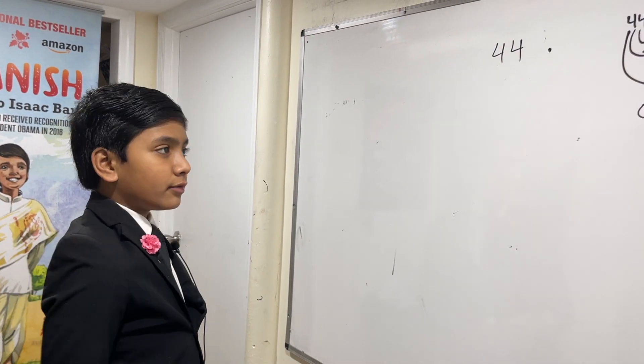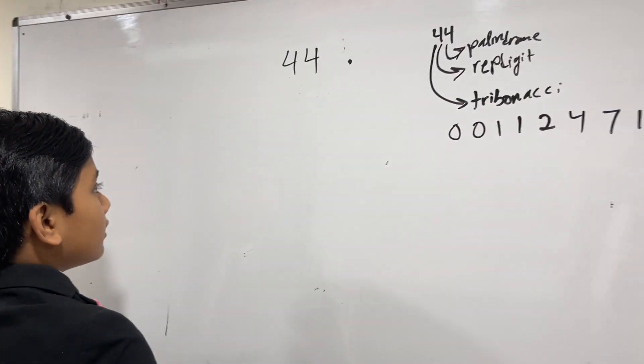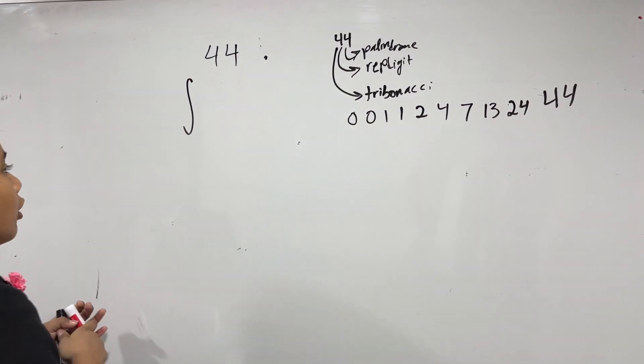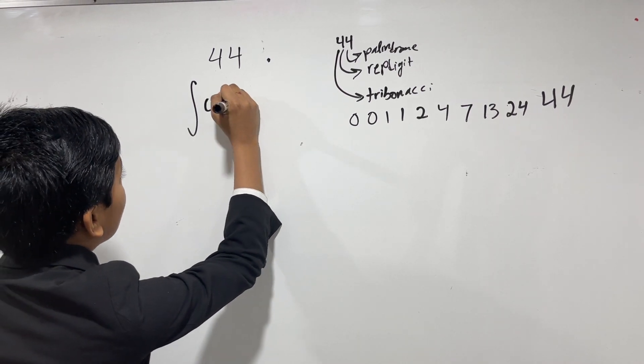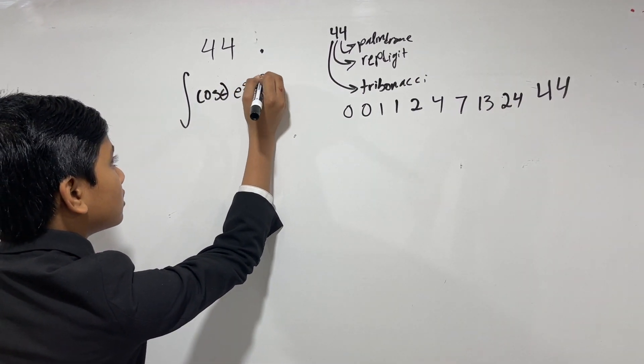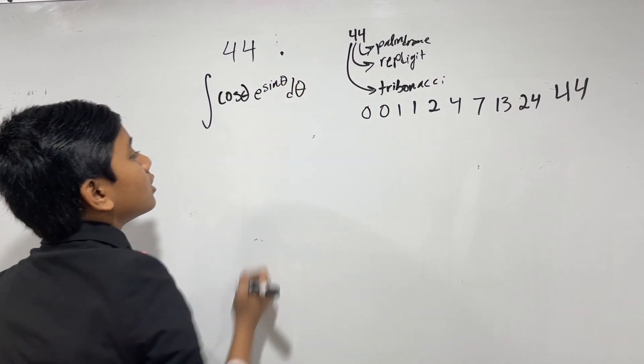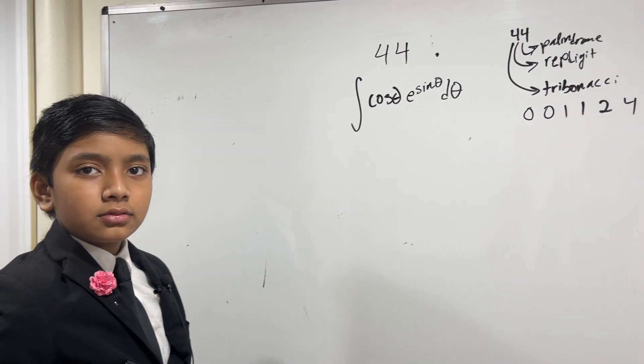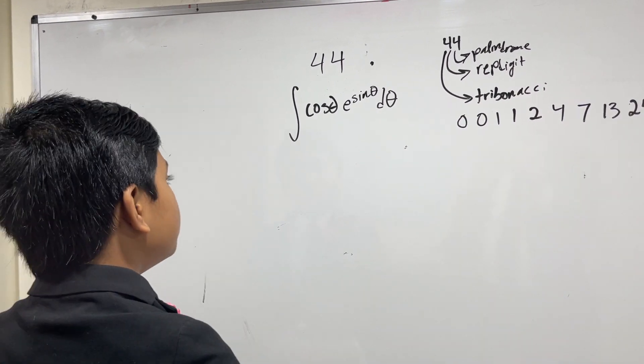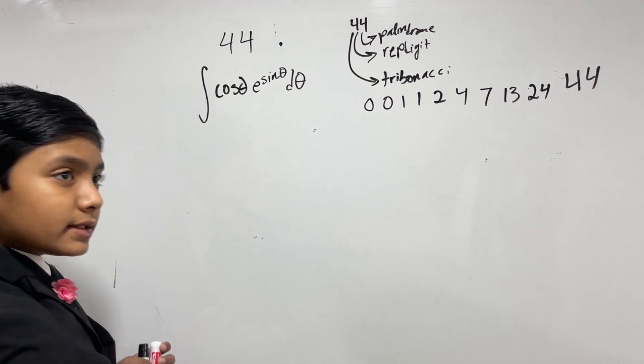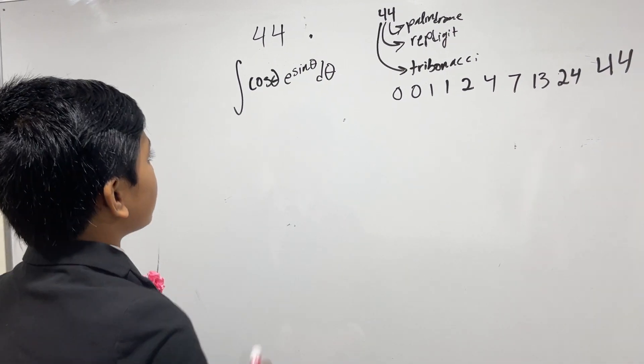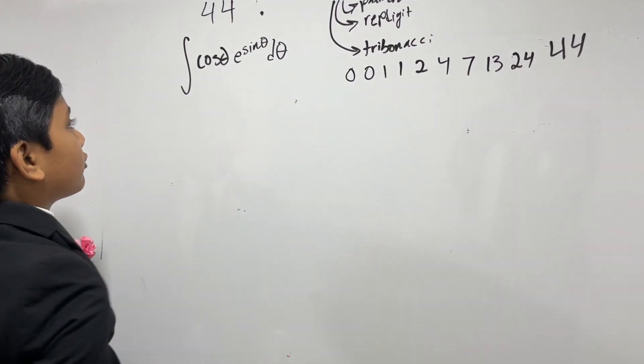Alright, so what is problem 44, anyways? Well, we have the integral of cos theta times e to the sine theta, d theta. How are you supposed to say cos or cos? Cosine. Okay, so how would we do this? Well, it's pretty obvious that some u-subbing needs to go on here, because you can't really integrate this right over here.